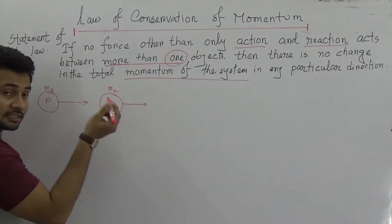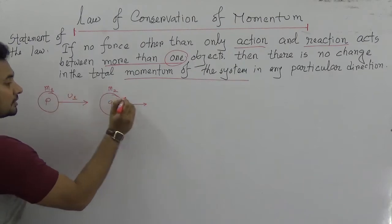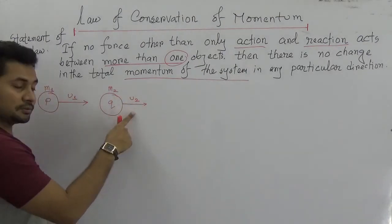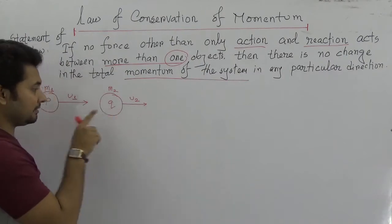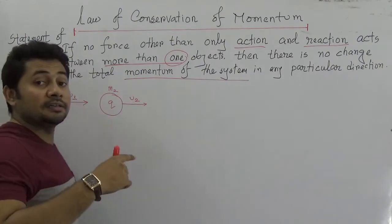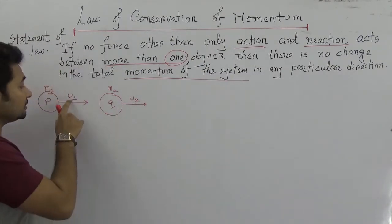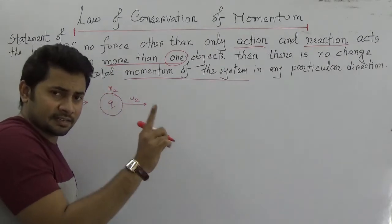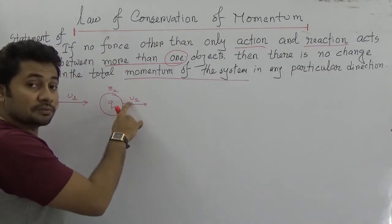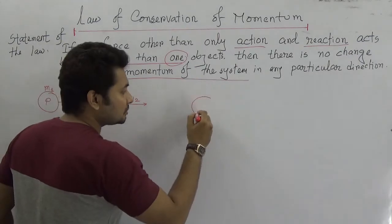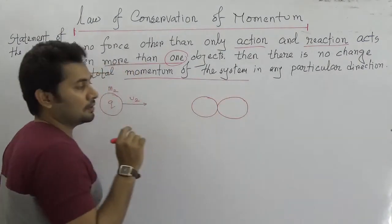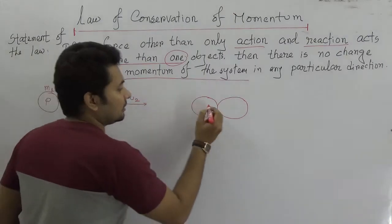The initial velocity of P is U1 and initial velocity is U2. And then suddenly what will happen if the velocity of P is slightly higher than U2? This P and this Q will have a collision.